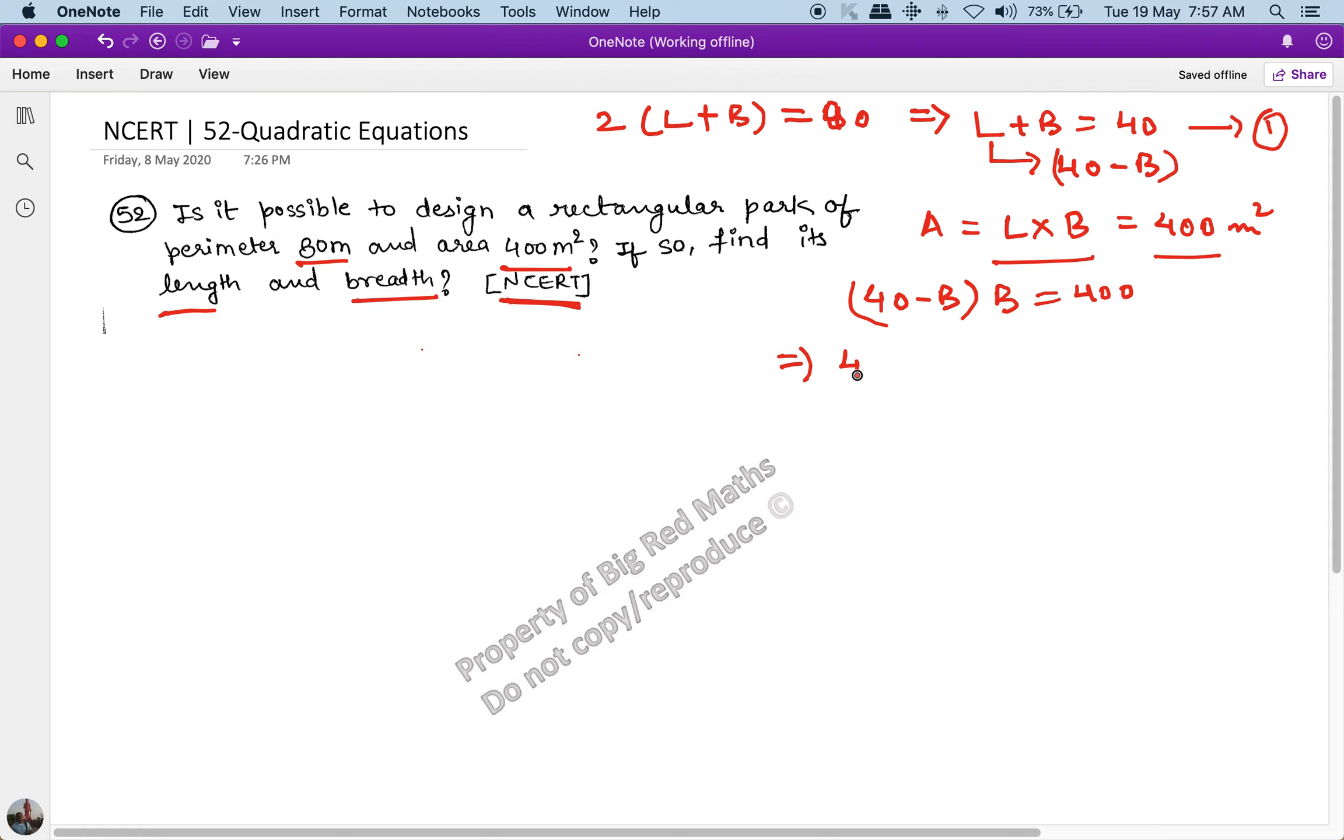Solving this quadratic equation is very simple. It becomes 40B minus B² equals 400, or B² minus 40B plus 400 equals 0.